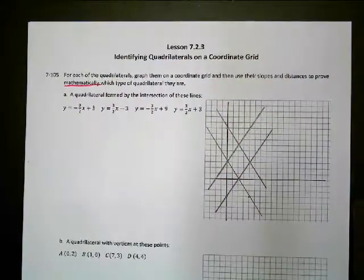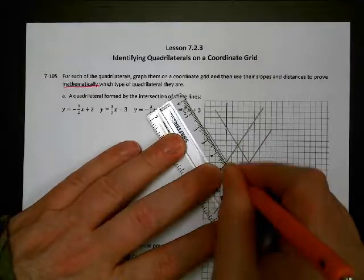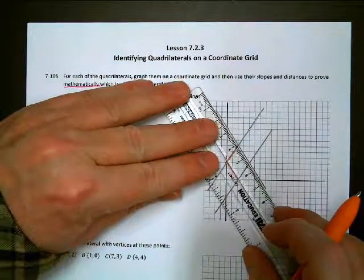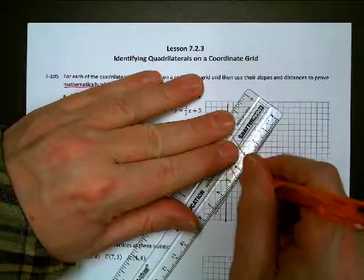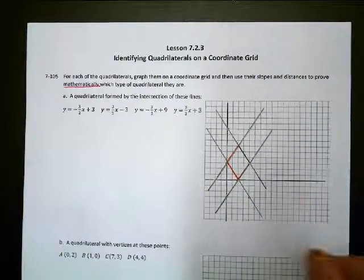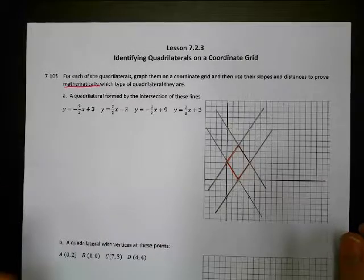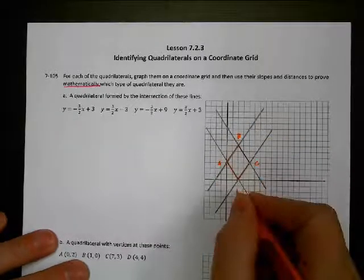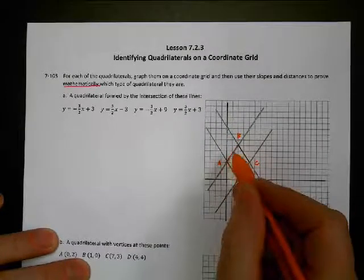So these four lines have bounded a quadrilateral — my quadrilateral is this shape right here. We're going to try to prove what kind of shape that is. Don't just look at it and assume you know what it is. Let's start looking at the math and let the math tell us. I'm going to label this: A, B, C, D. So I'm going to find the slopes and the distances of these four sides.